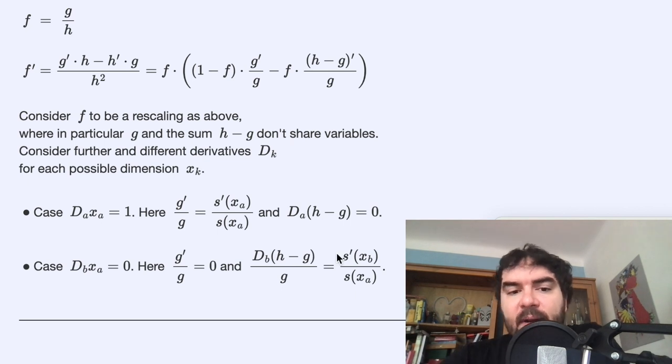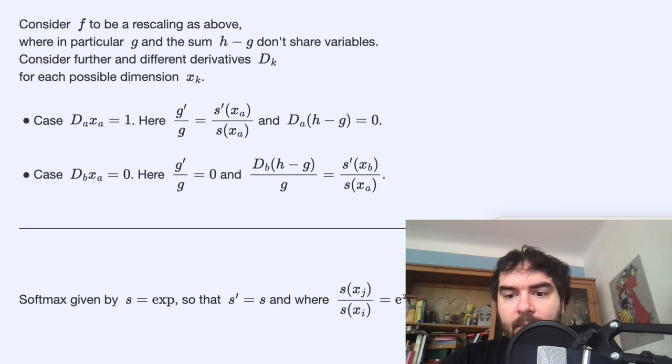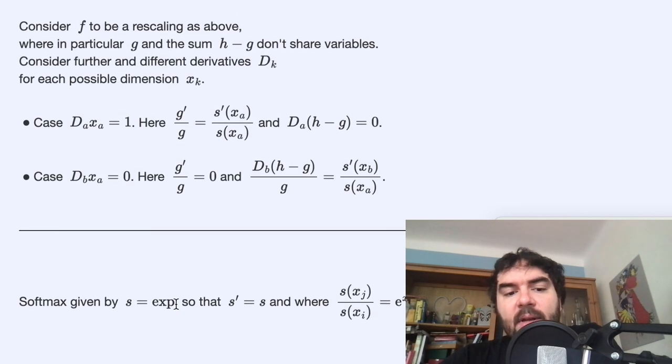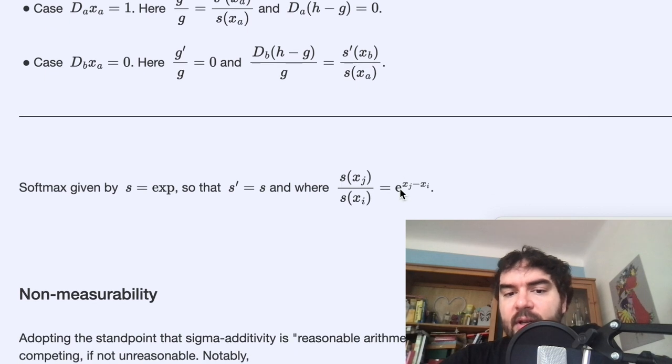Yeah, and of course, if you take s to be the exponential function, then this is particularly nice. Because this is the last line here, or this is another comment: then if you take s to be the exponential function, then the derivative of s is again s. And so these terms are particularly simple, and in particular here they turn out then to be just literally exponential factors.